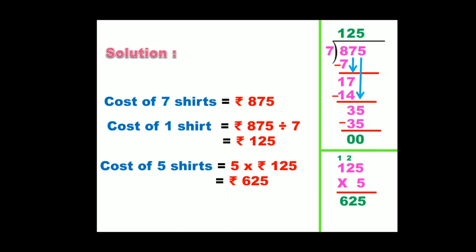Now to find the cost of 5 shirts we are going to multiply it by the cost of 1 shirt. So, we have written 5 into ₹125. That is ₹625.